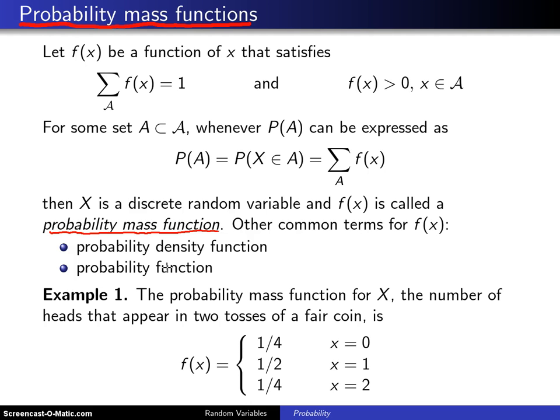Here is example one. This is exactly the same example that was covered on the previous two slides. The probability mass function for x, the random variable x, which is the number of heads that appear in two tosses of a fair coin is: And over here, we put the support. You can get 0, 1, or 2 heads when you toss a fair coin twice.